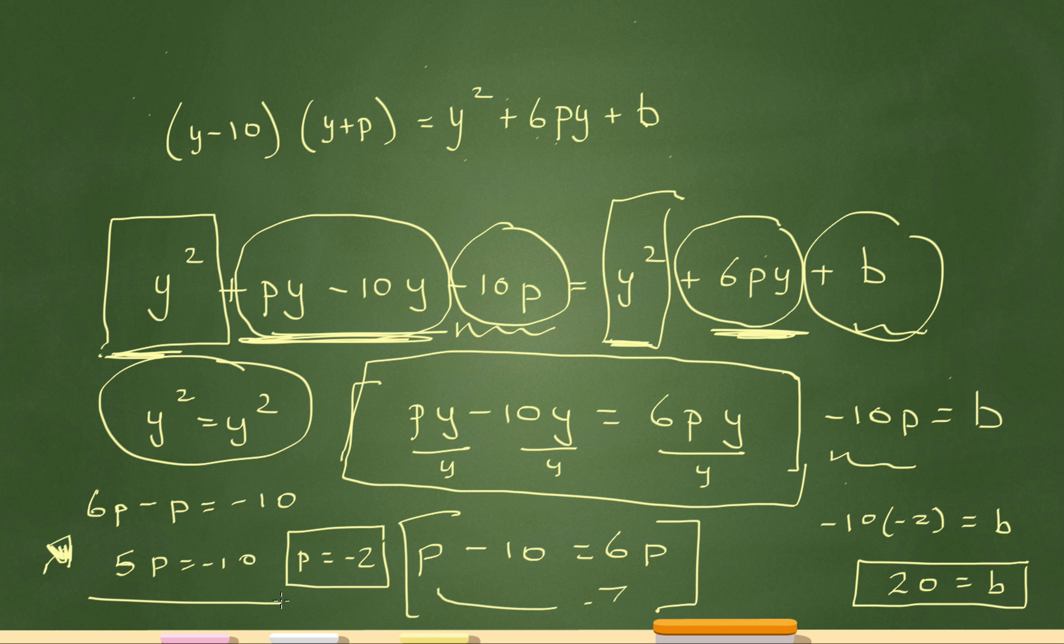And then I solved for p over here. p gave me negative 2. And then I plugged the negative 2 in here because I was trying to solve for the b. And that gave me the final value of b, which was 20.